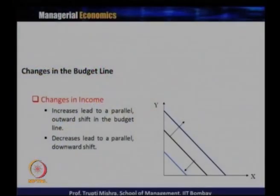The indifference curve gives consumer preferences and satisfaction, while the budget line gives the possible combinations of X and Y that can be consumed with a fixed money income. We have simplified this to two goods for analytical ease, but in practice goods can be clustered into groups and represented on the indifference curve.